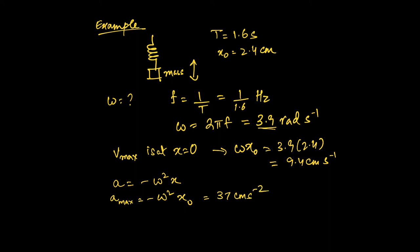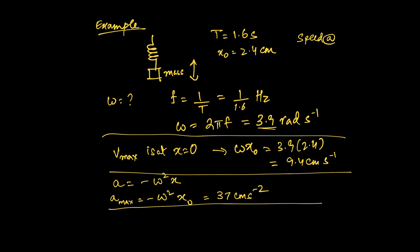And what else could we learn from this system? One other thing that we can learn from the system is, let's say, what's the speed of this particle at a certain point? Let's say I want to know speed at a displacement from its equilibrium position of 0.6 centimeters. The way you would follow through on that is omega times the square root of x naught squared minus x squared. Omega is 3.9 times the square root of 2.4 squared minus 0.6 squared, and that works out to be 9.1 centimeters per second.